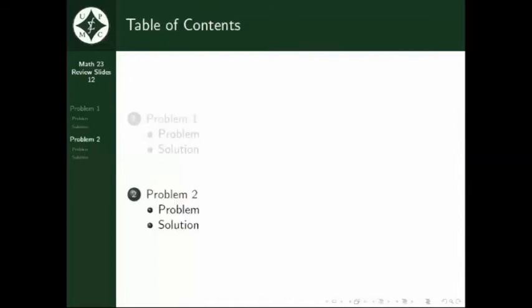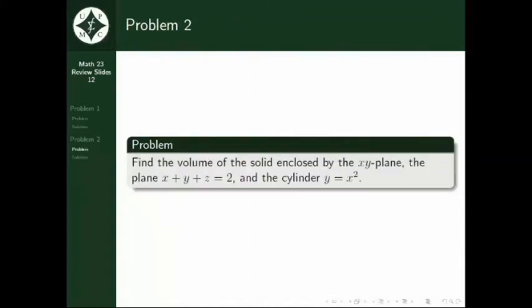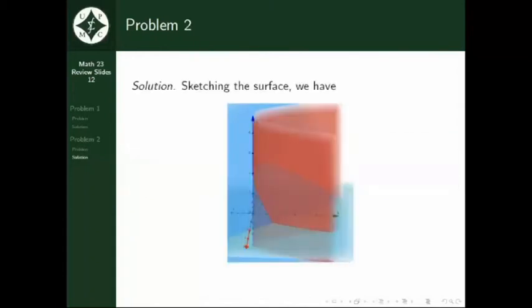Moving on to the second problem: we need to find the volume of the solid enclosed by the xy-plane, the plane x plus y plus z equals 2, and the cylinder y equals x squared. Sketching this surface, notice that the solid is bounded above by the plane z equals (2 minus y minus x), shaded blue, and is bounded below by the xy-plane where z equals 0.